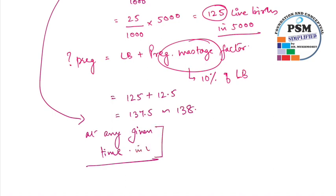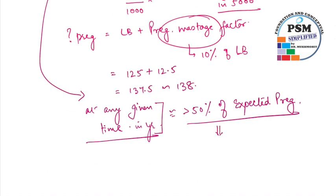So at any given time in a year, at least minimum more than 50 percent of expected pregnancies should be registered. That's a simple answer: half of 138 would be 69 pregnancies should be registered.